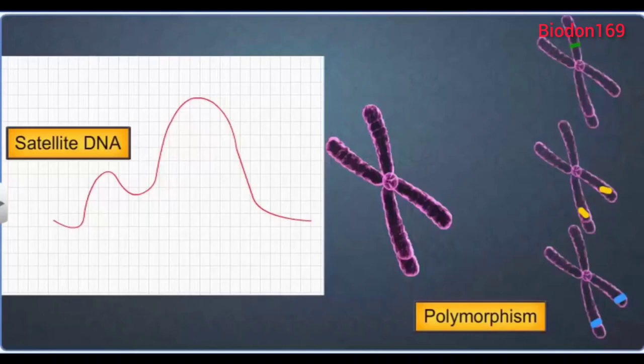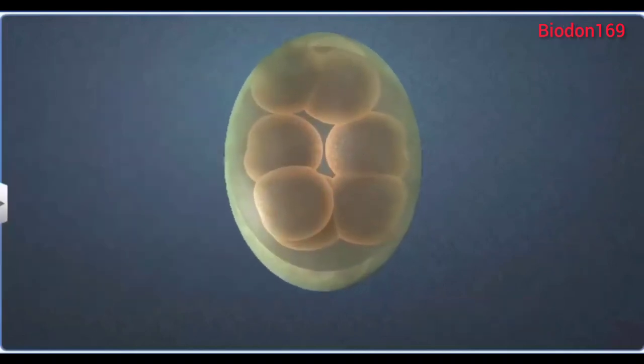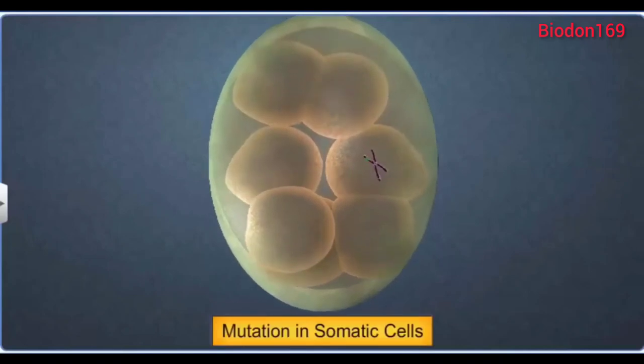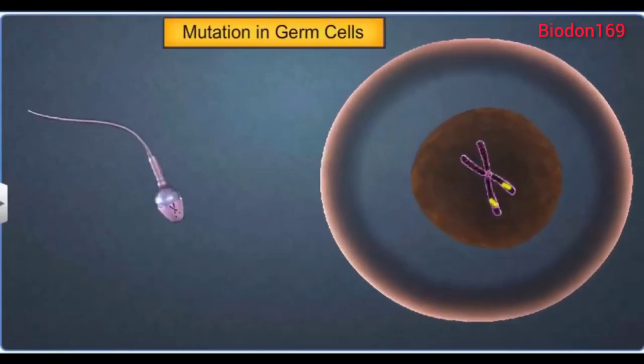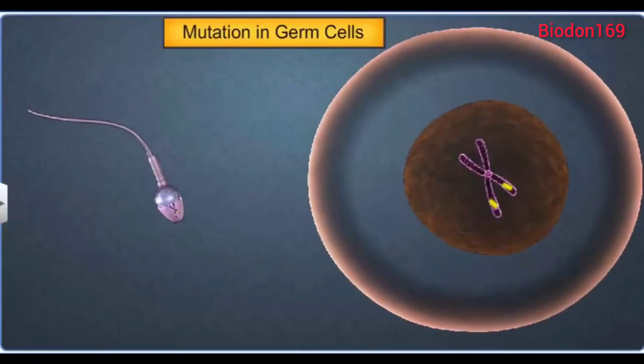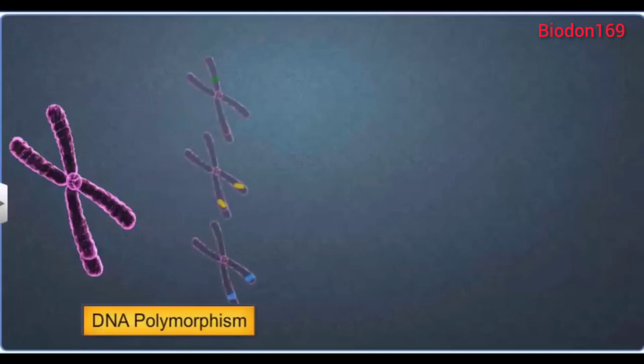DNA polymorphism is the result of mutations in either somatic cells or germ cells, which accumulates over generations. DNA polymorphism is the guiding principle behind genetic mapping and therefore helps in the DNA fingerprinting technique.